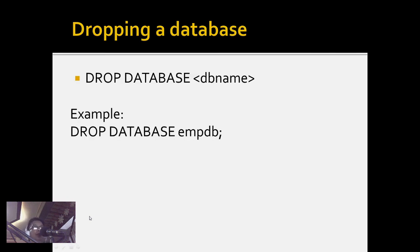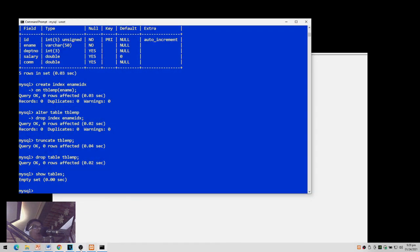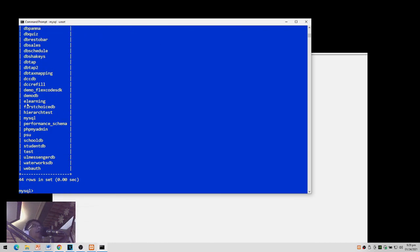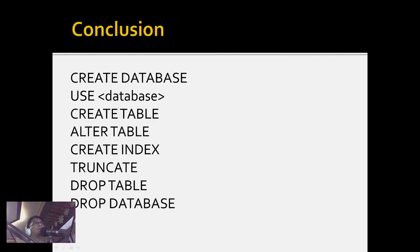We can also drop the database itself using DROP DATABASE followed by the database name — DROP DATABASE mdb. Running SHOW DATABASES confirms mdb is no longer listed. In summary: use CREATE DATABASE to create a database, USE to select it, CREATE TABLE to create tables, ALTER TABLE to modify them, CREATE INDEX for indices, TRUNCATE to reset a table, DROP TABLE to delete tables, and DROP DATABASE to delete a database.